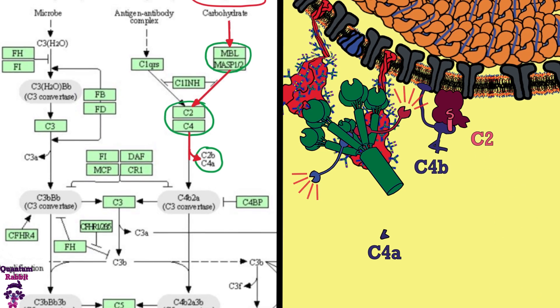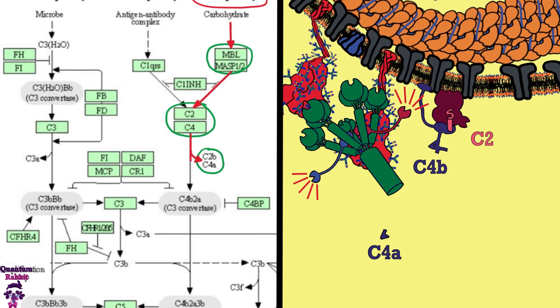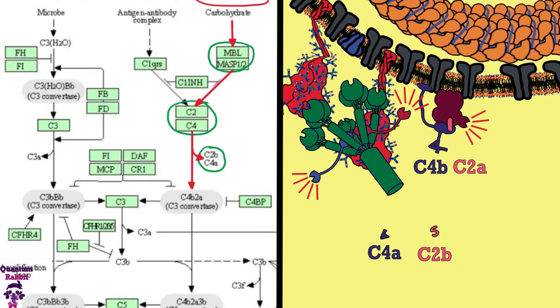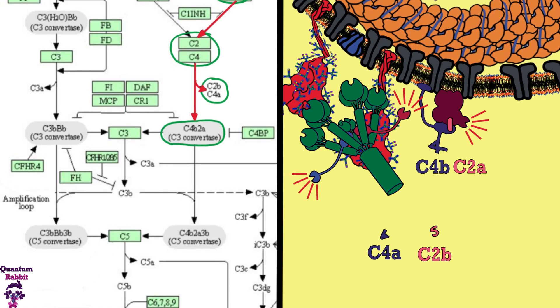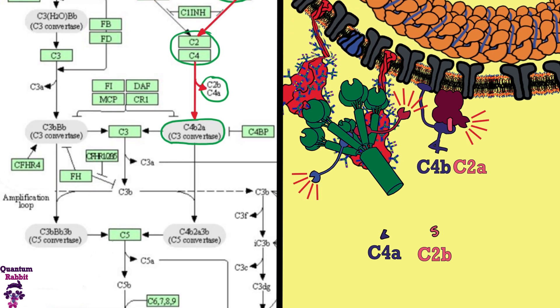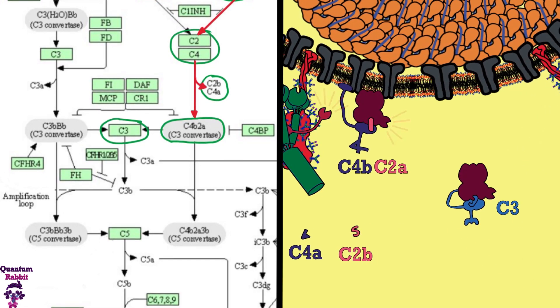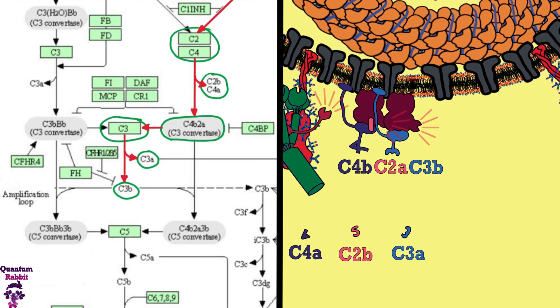This forms the C4b-C2a complex, also called C3 convertase. The C3 convertase begins to massively hydrolyze the C3 proteins into two parts, C3a and C3b. The C3b parts get covalently attached to the membrane.